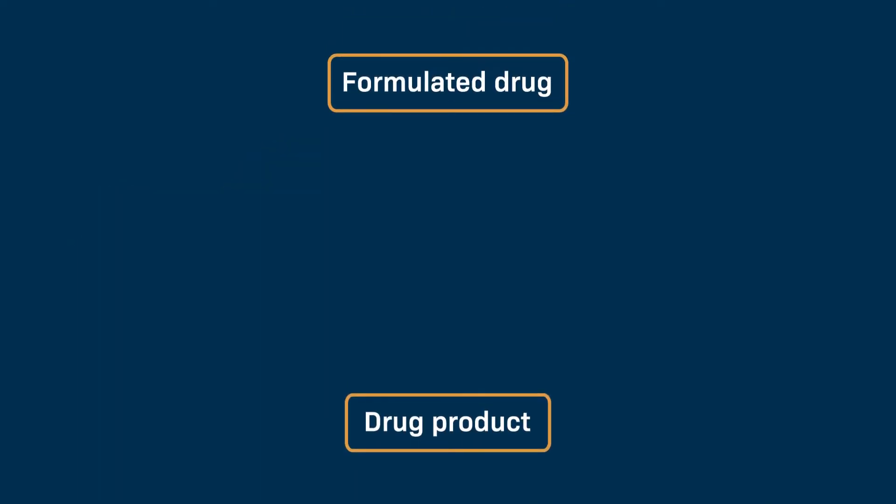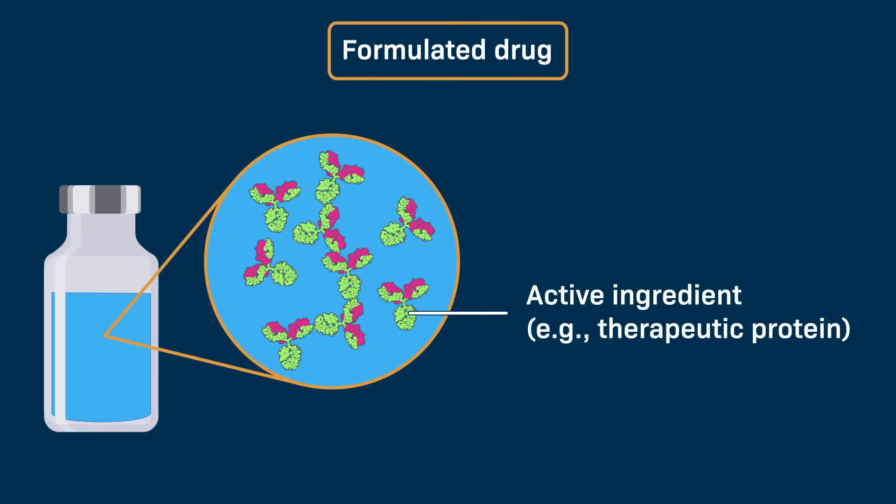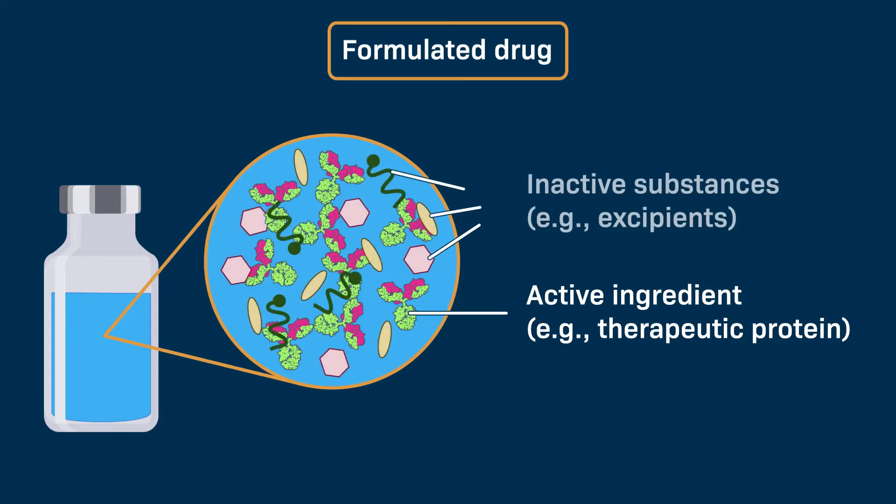To become a drug product, a formulated drug must undergo a manufacturing step called the fill-finish process. A formulated drug is one where the active ingredient, such as a therapeutic protein, has been mixed with inactive substances, which are called excipients.